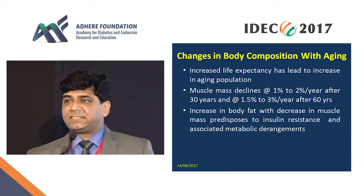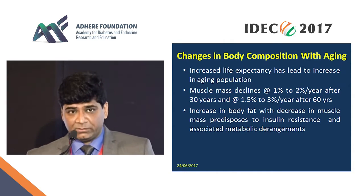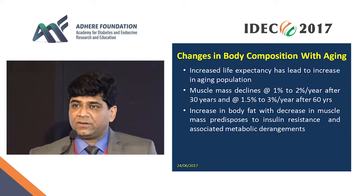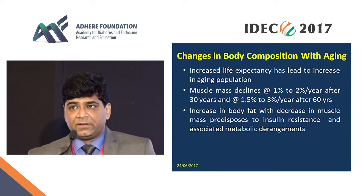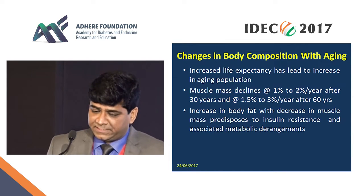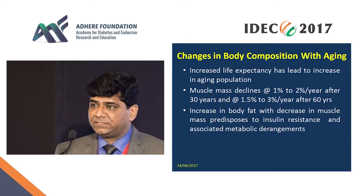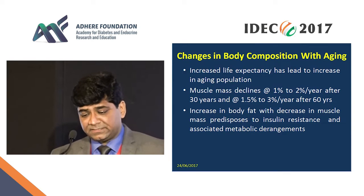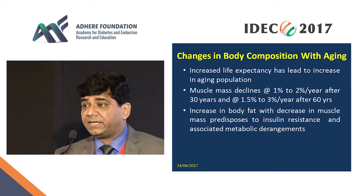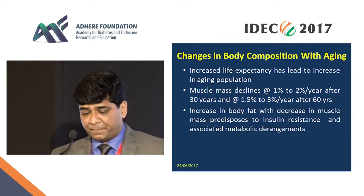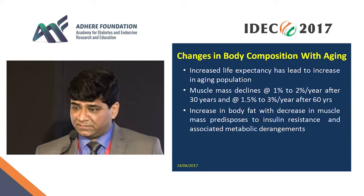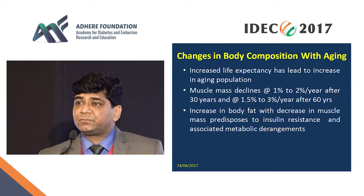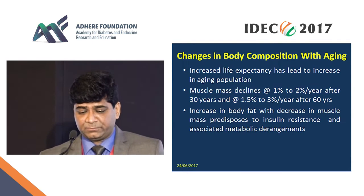We all know that increased adiposity is associated with insulin resistance. However, emerging data indicates that having low muscle mass also has influence on the development of insulin resistance. With increasing life expectancy, there is an increased proportion of the aging population, and their muscle mass declines gradually with age. Both increasing body fat and declining muscle mass could lead to increased disposition to insulin resistance and other associated metabolic problems.